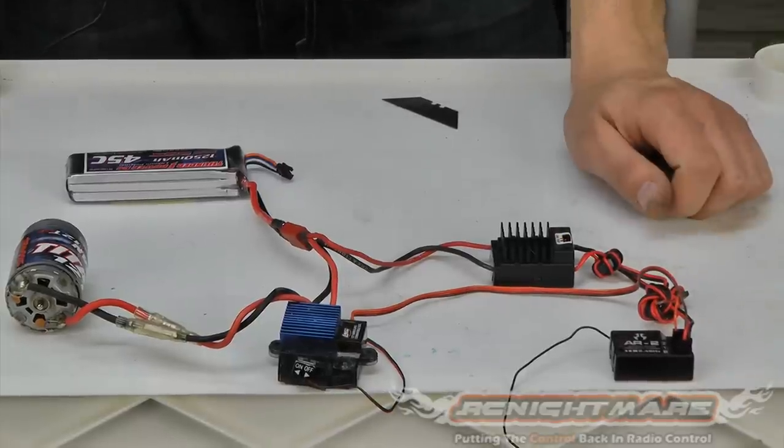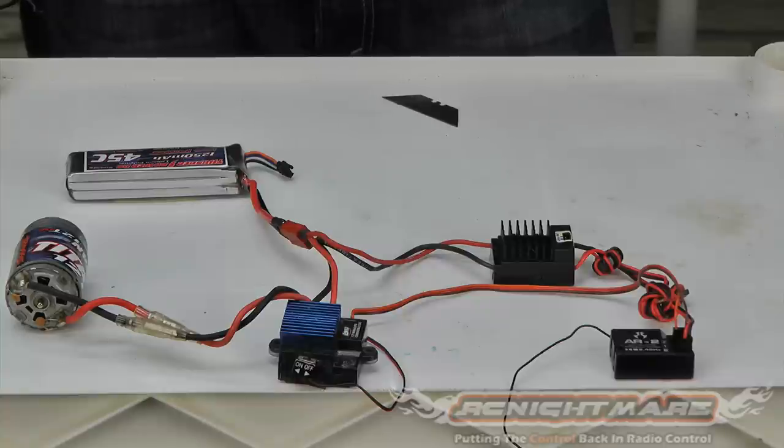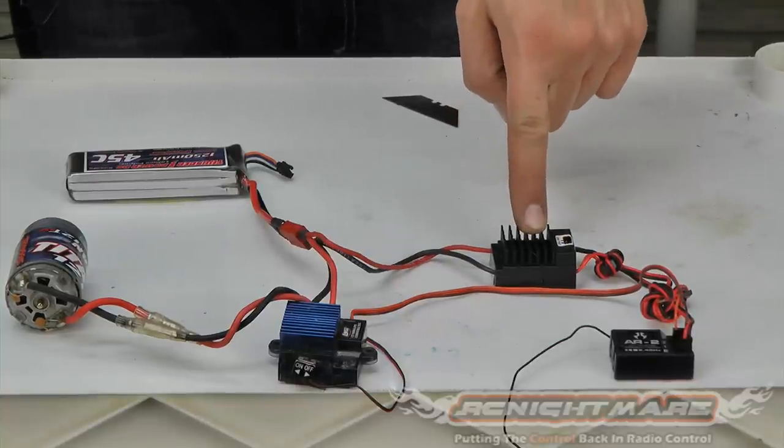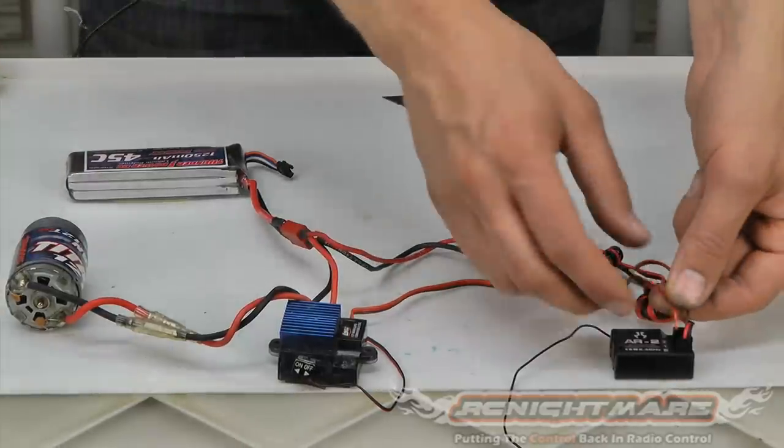And in this case, it could be a higher end servo. That's usually why I use a BEC. If you have a rock crawler or a really high end truck, you need a high power servo. The BEC will make sure it gets all the current that it wants so you get the most potential out of it. So that's the setup, guys. There's nothing to it.